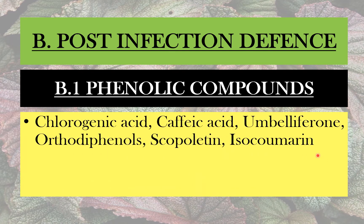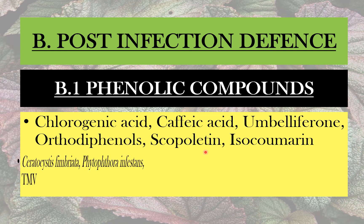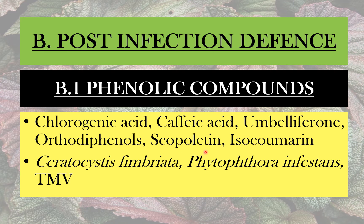Some examples of phenolic compounds present in plants are chlorogenic acid, caffeic acid, umbelliferone, orthodiphenol, scopoletin, and isofumerin. The organisms known to induce production of phenolic compounds include Ceratocystis fimbriata, which affects sweet potato, potato plants and carrots; Phytophthora infestans, which infects sweet potato plants and potatoes; and TMV, which is tobacco mosaic virus. These are examples of pathogens that induce phenolic compound production in their respective host plants.